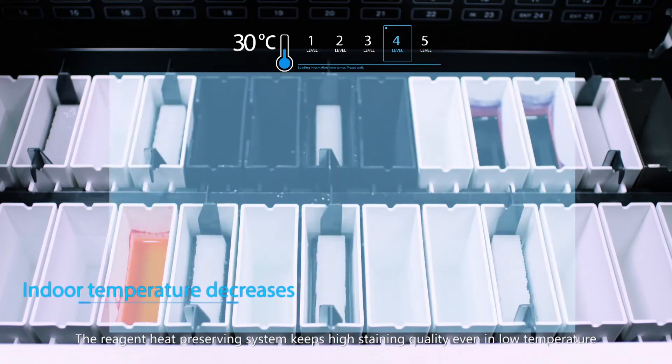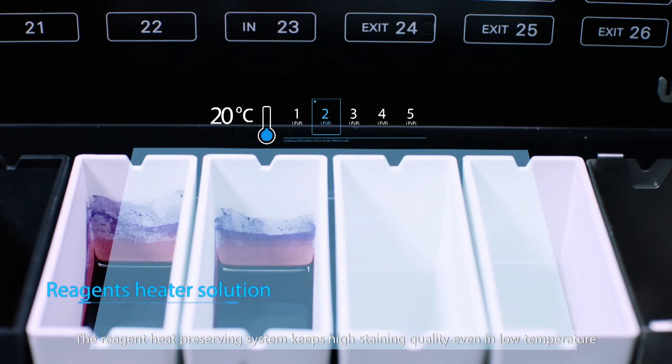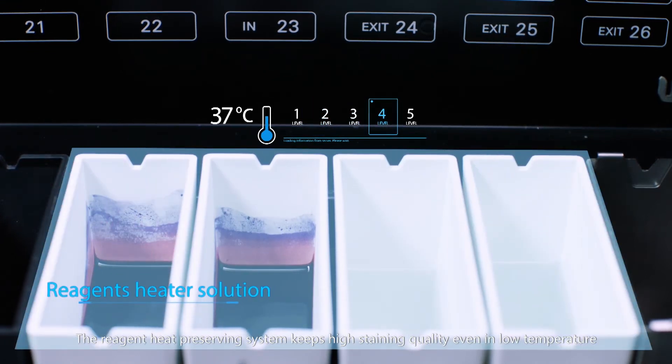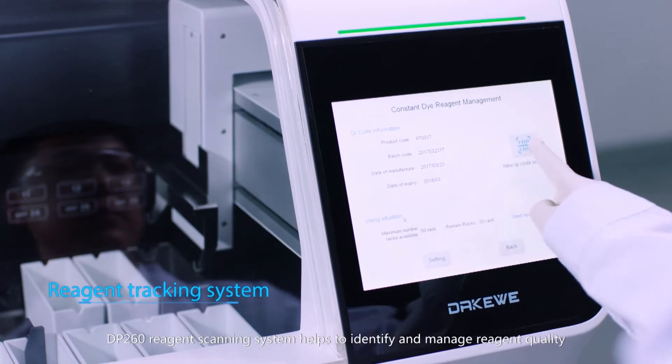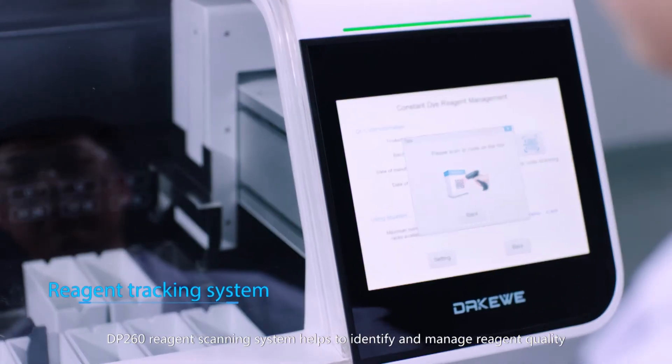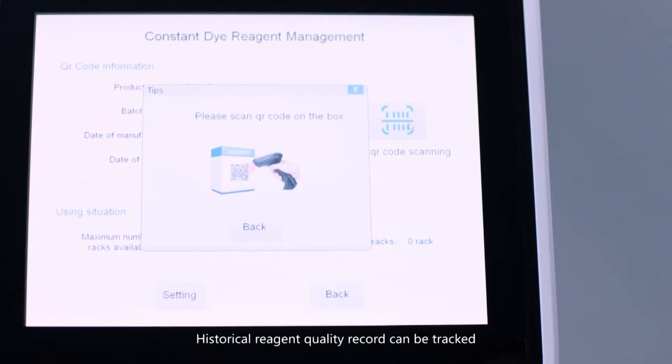The reagent heat preserving system keeps high staining quality even in low temperature. DP-260 reagent scanning system helps to identify and manage reagent quality. Historical reagent quality record can be tracked.